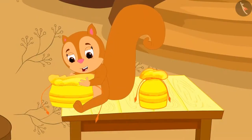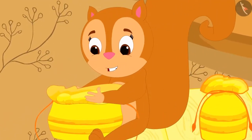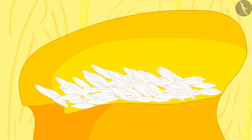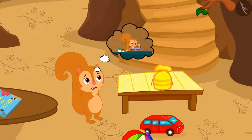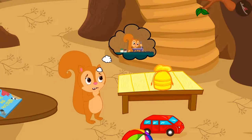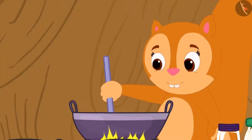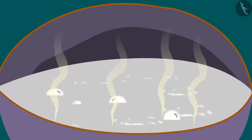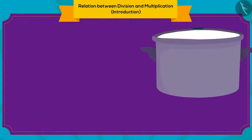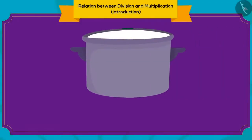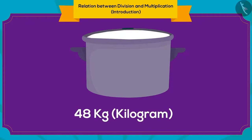Now, Chanda opened her second parcel and found some rice grains in it. Chanda thought she could cook some kheer for herself. But as soon as she began cooking the kheer, it kept on increasing in quantity. At last, from those rice grains, Chanda managed to make 48 kg of kheer.